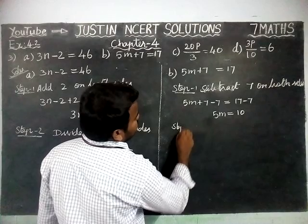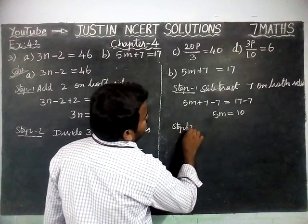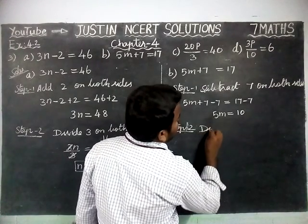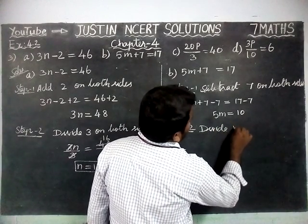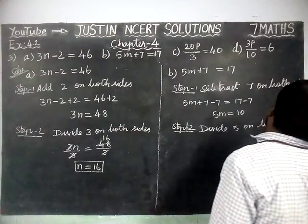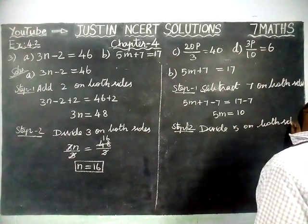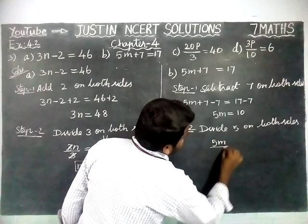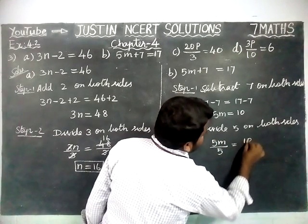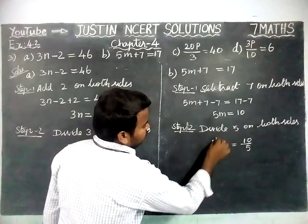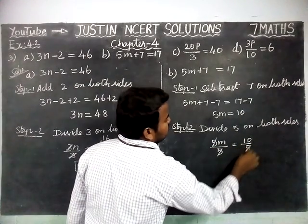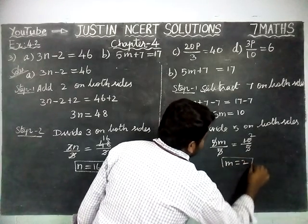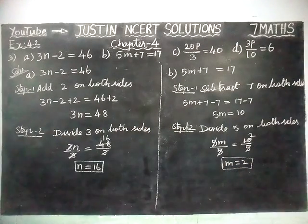Now in step 2, we have to cancel this 5. Since it is in multiplication, we are going to divide by 5 on both sides. So 5m divided by 5 is equal to 10 divided by 5. The 5s get cancelled, and 10 divided by 5 equals 2. So m equal to 2.